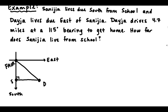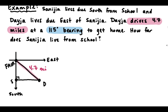Let's go through and find our information so we can label our diagram. Deja drives 4.7 miles, so school to Deja is 4.7 miles — that's labeled right there. And her bearing is 115 degrees. Remember, that's clockwise from north, so starting north and going clockwise to Deja gives us 115 degrees.